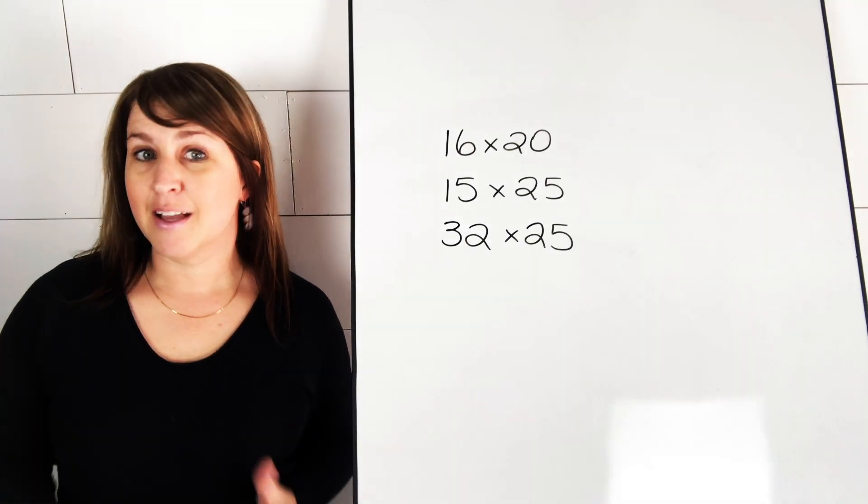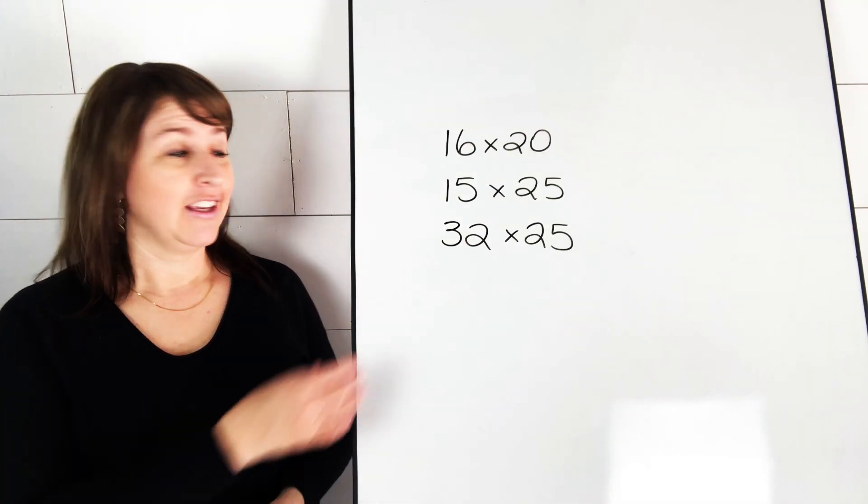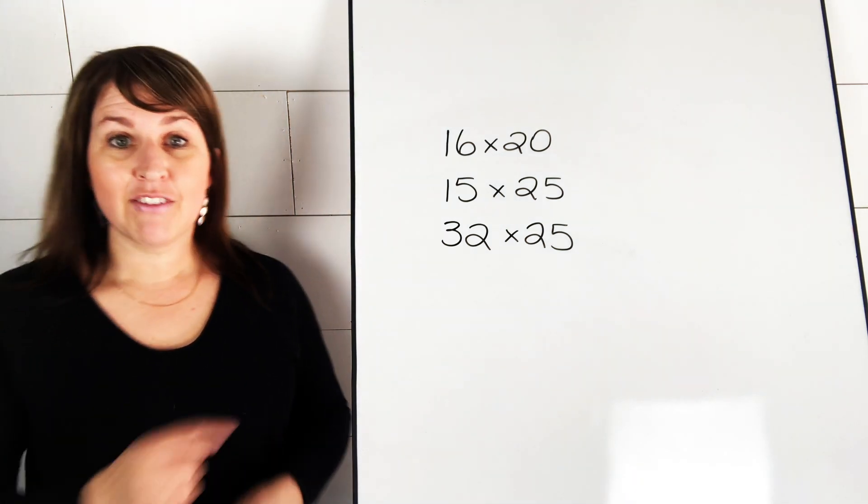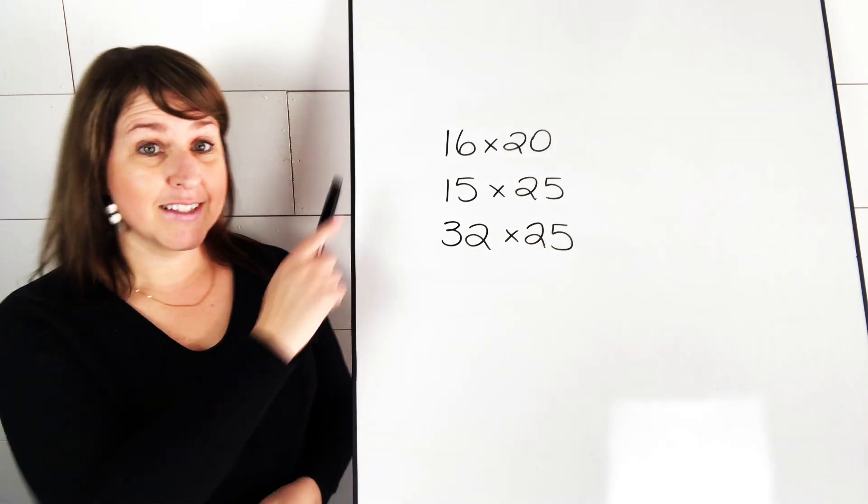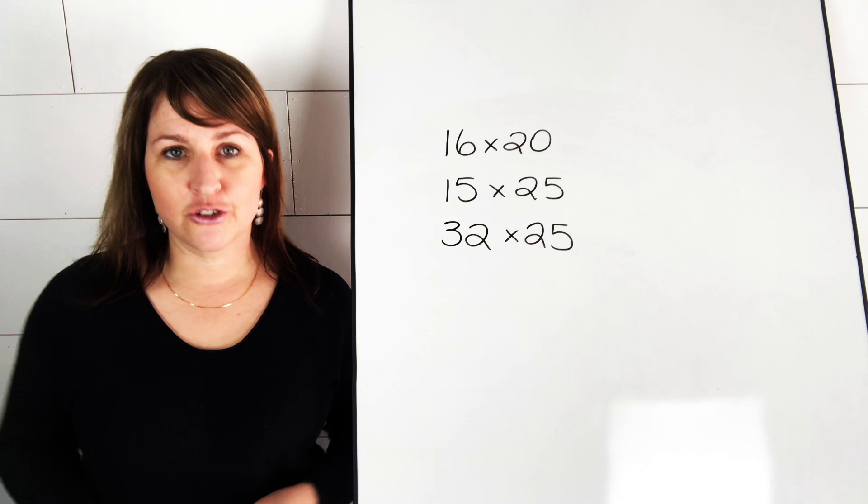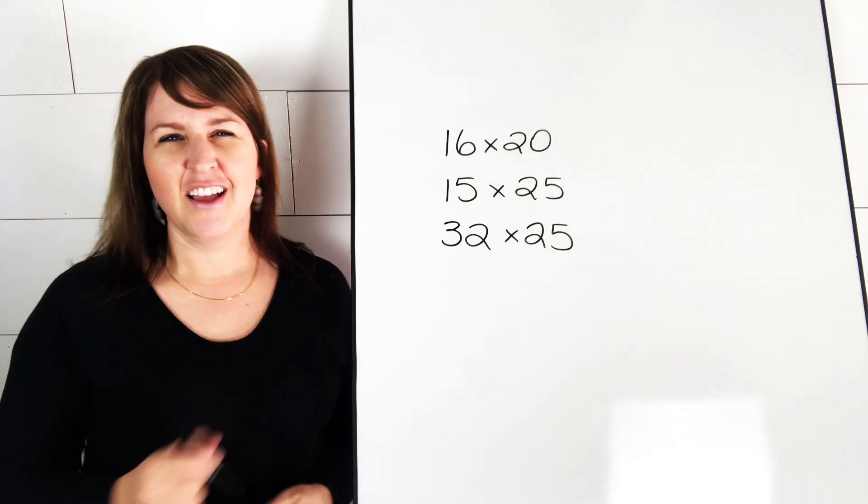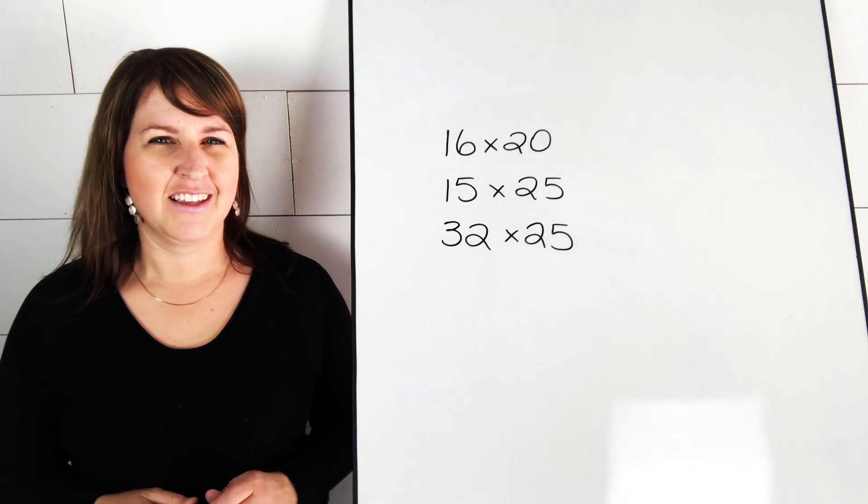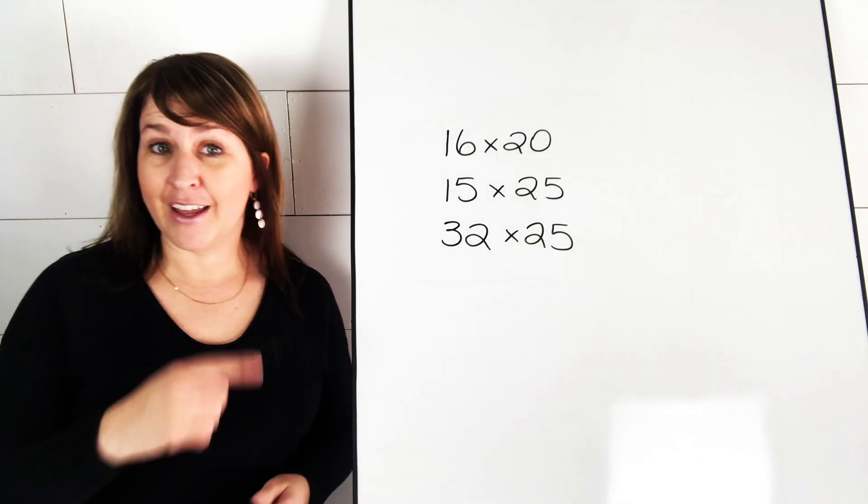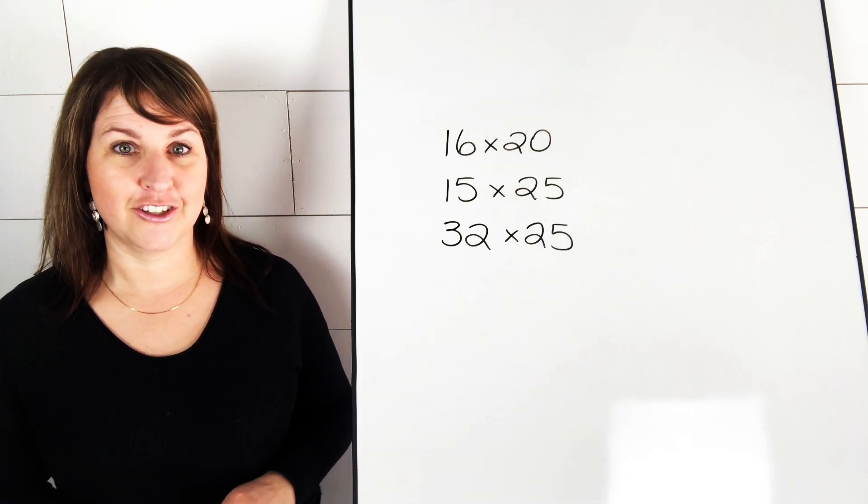Now there are some times when doubling and halving is not the best strategy in order to solve an equation. And I want you to investigate this further. So I've given you three examples here: 16 times 20, 15 times 25, and 32 times 25. For one of these questions, I don't think that doubling and halving is a real good strategy to choose. And I want you to figure that out for yourself and then figure out why. Why isn't it that good of a strategy to use?